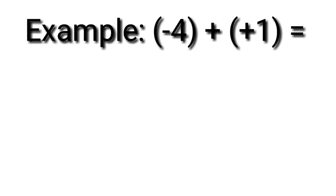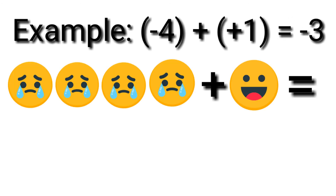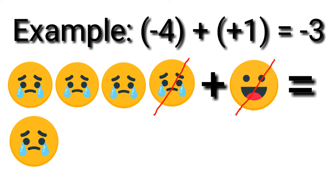Example: negative 4 plus positive 1 is equal to negative 3. Four sad faces added to 1 happy face. Eliminate 1 happy face and 1 sad face. Three sad faces left — negative 3.